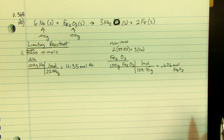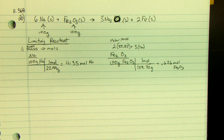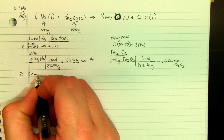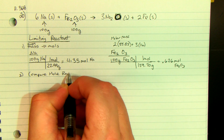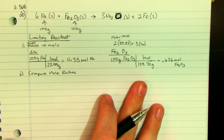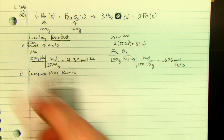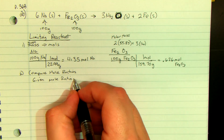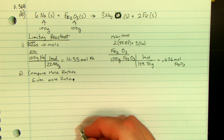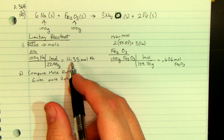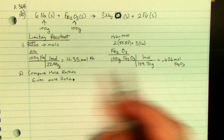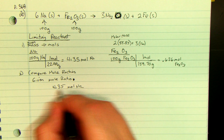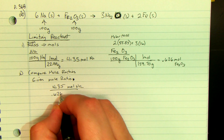Now here's what I'm going to do — that's part one. Part two is to compare mole ratios. In order to figure out the limiting reactant, we have to compare mole ratios. I'm going to take the given mole ratios — sodium on top of iron 2 oxide — so 4.35 moles of Na over 0.626 moles of Fe2O3.